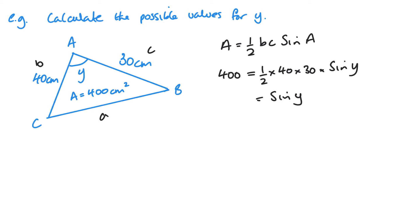So we have 400 divided by 600, which is 2 thirds. So sine Y equals 2 thirds. Y equals inverse sine of 2 thirds, and this gives me 41.8 degrees.